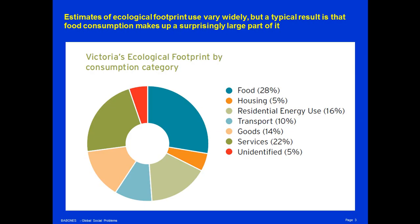Estimates of ecological footprints vary widely, but a typical result is that food consumption makes up a surprisingly large proportion — over one quarter. And food, housing including energy use (that is heating and lighting your house), and transportation usually account for more than half of the total ecological footprint.